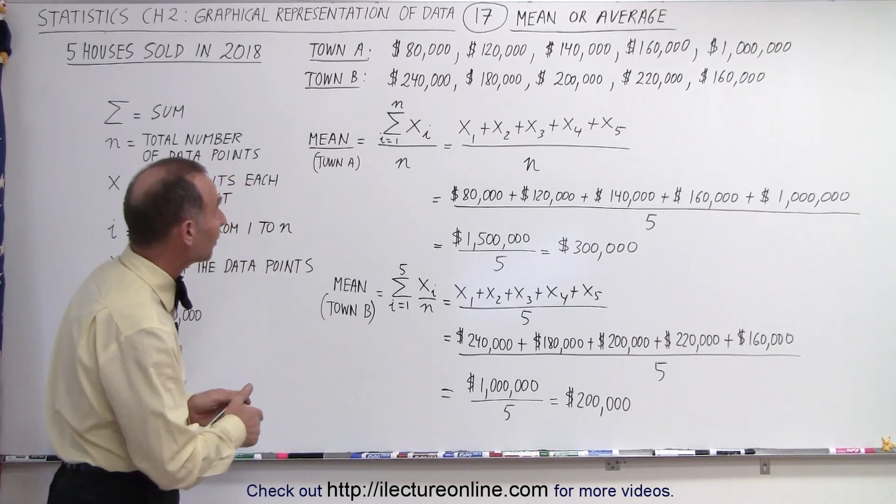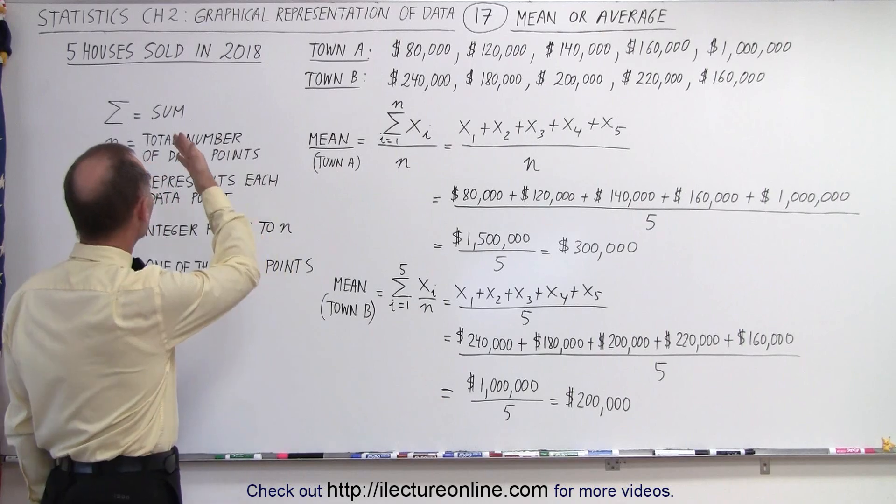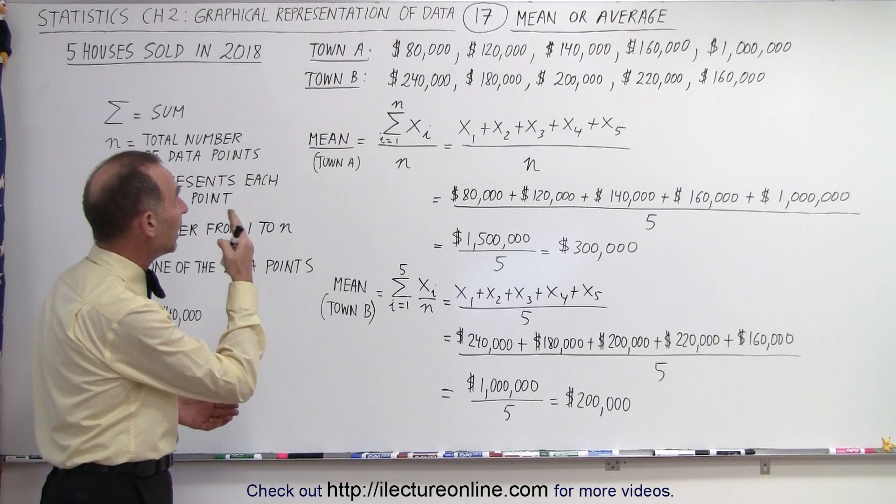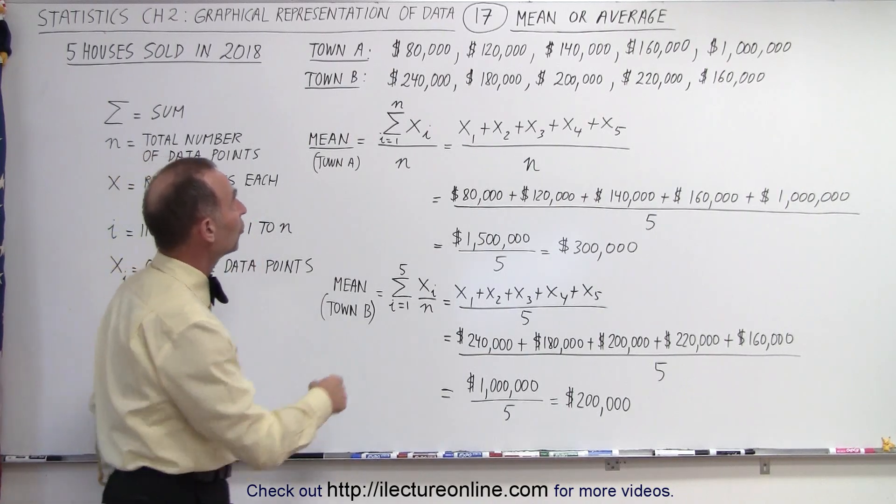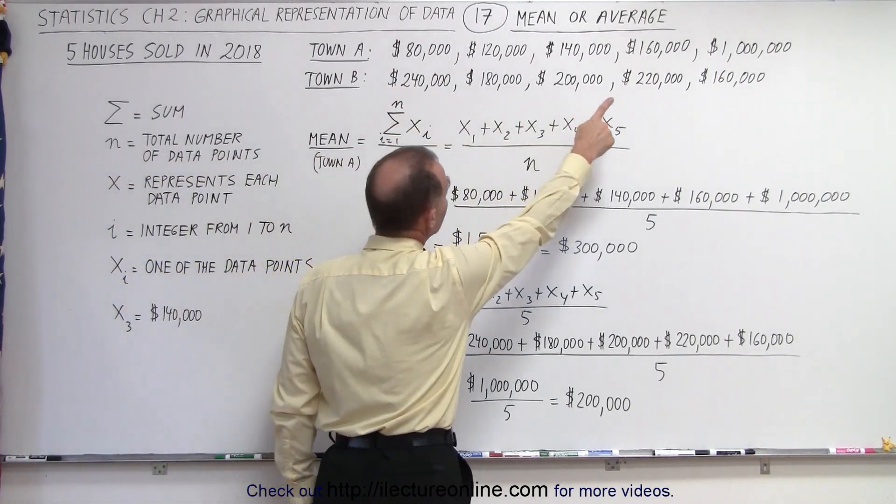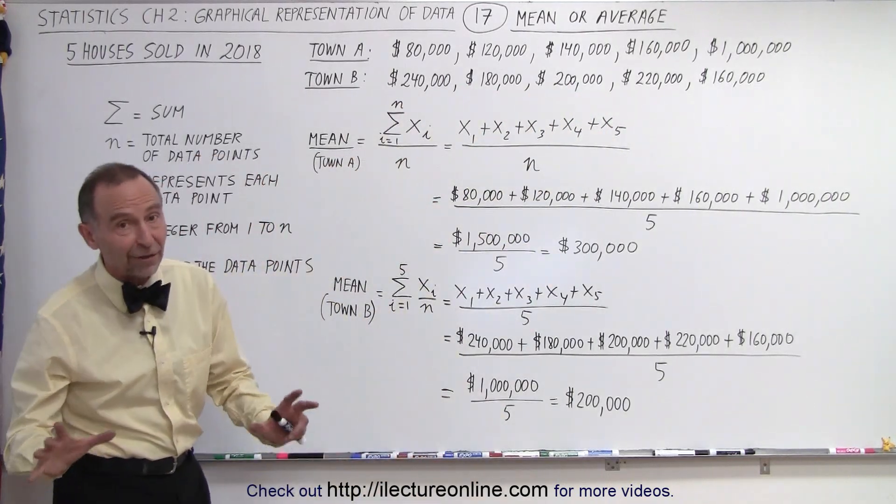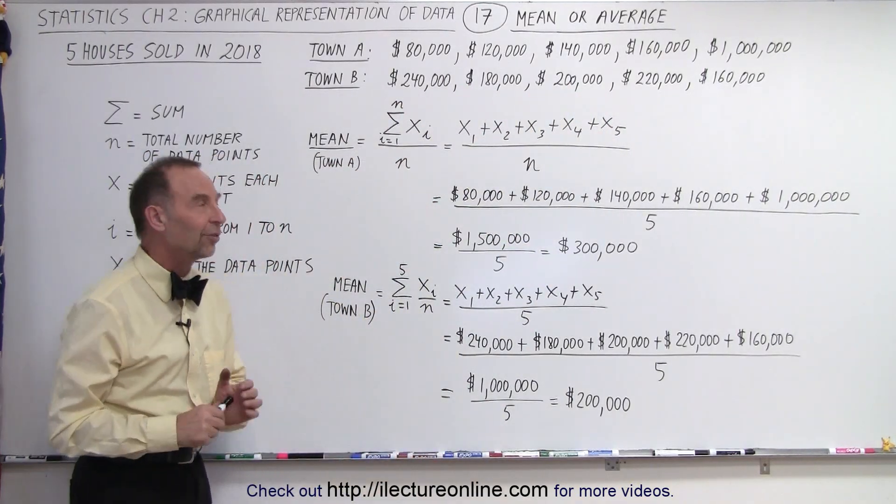So let's take a look at the house prices of houses that were sold in 2018 in two different towns. We have town A and we have town B. Notice the house prices for town A and the house prices for town B. In each case, five houses were sold in each town in 2018.